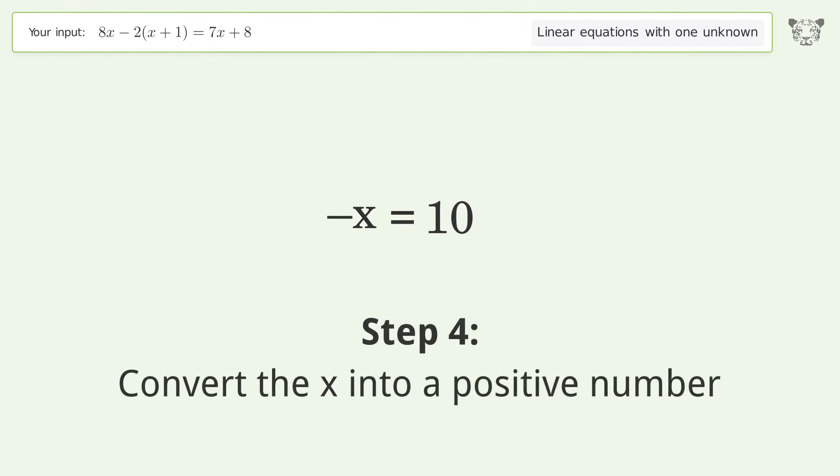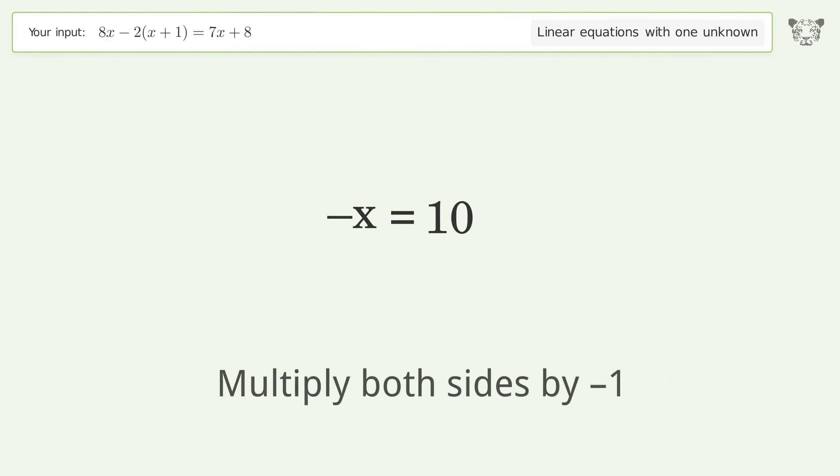Convert the x into a positive number. Multiply both sides by negative 1. Remove the 1s. Simplify the arithmetic.